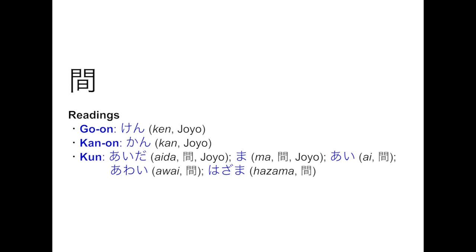MA also connotes various key terms like human, space, comrade, day or night, year or month, or period, by being combined with other characters. MA is a very important word among Japanese to communicate with each other and to express ways to address the world.